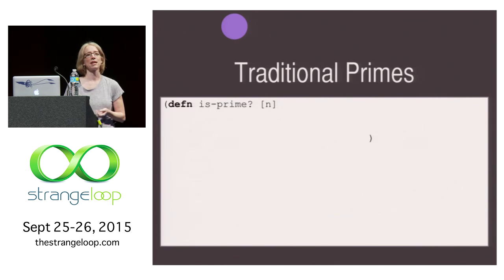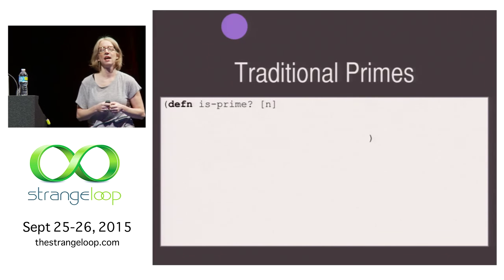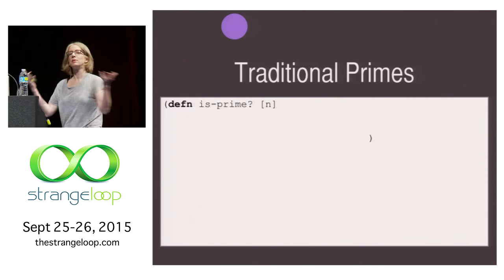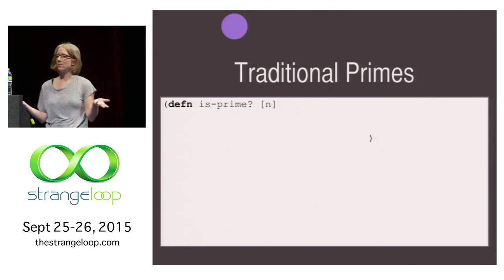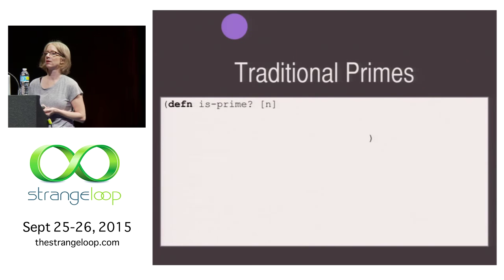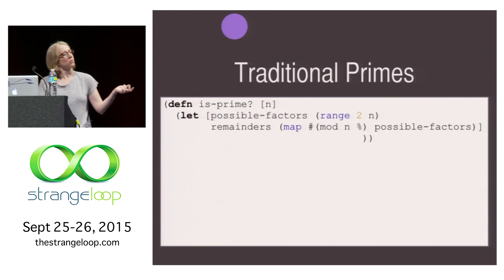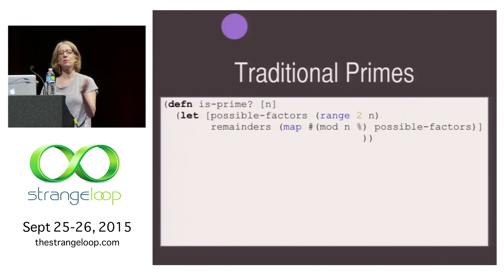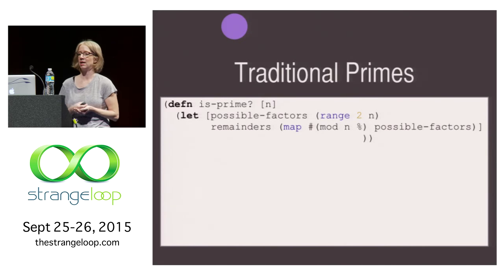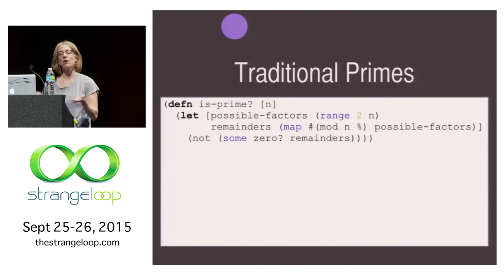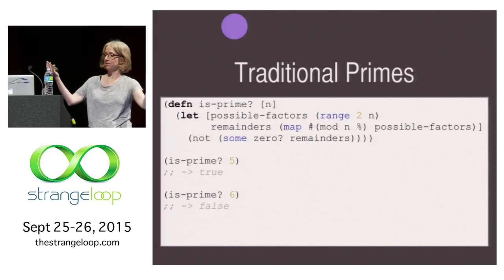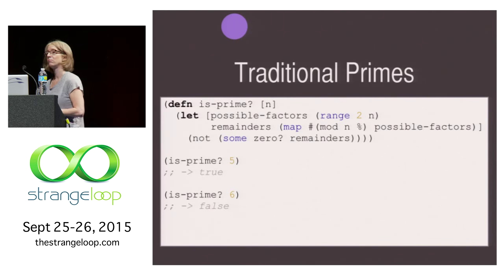Going back to our example, let's take a look at computing traditional primes in Clojure. We would define a function to figure out whether something's prime or not. We'll call it is prime question mark, and we give it a number. We could look at all the possible factors of this number from 2 up to the number, and then we can find its remainders. And we can see then are any of these remainders zero? If they're not, then it's prime. So we could look at, is 5 prime? Yes. Is 6 prime? No.